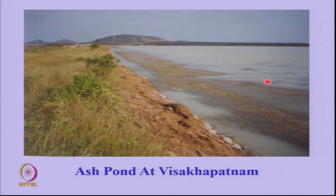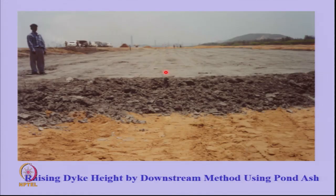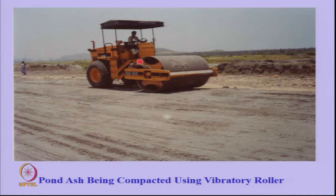This is an ash pond at Visakhapatnam — almost like a lake, 2 kilometers by 1 kilometer. On one end the slurry is going in, and ash can be used for infrastructure development. Here it is being rolled like a soil using a roller. The question in your mind is whether this material is safe, hazardous, or has heavy metals — that is something we will address.